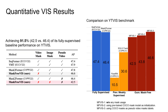Here are the quantitative results comparison. Mask-Free VIS achieves 91.5% of its fully supervised baseline performance, Mask2Former, without using any masks during training. The results clearly demonstrate the efficacy of our method by drastically narrowing the gap between fully and weakly supervised VIS performance, making weakly supervised models more accessible in practice. It further demonstrates that expensive video masks, or even image masks, are not necessary for training high-performing VIS models.